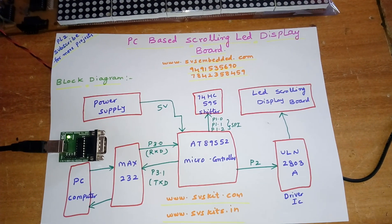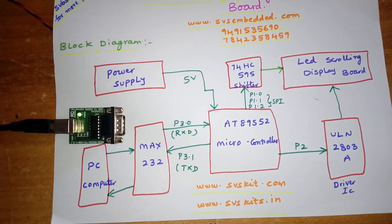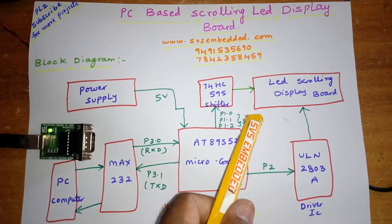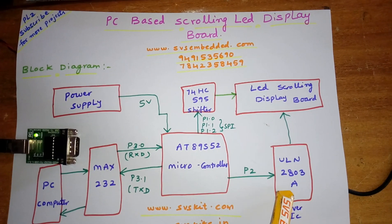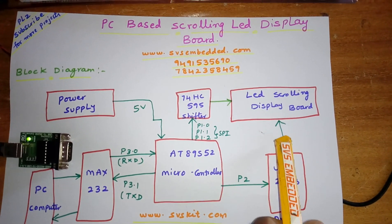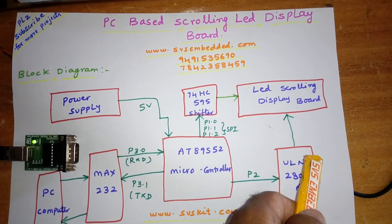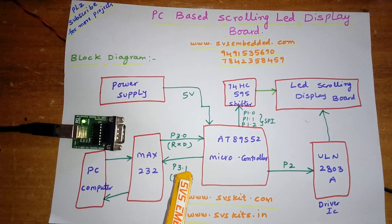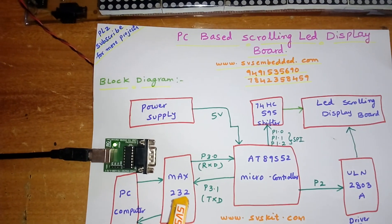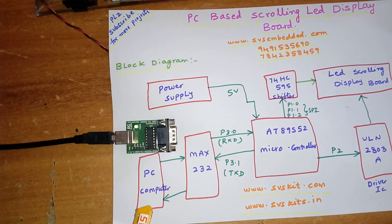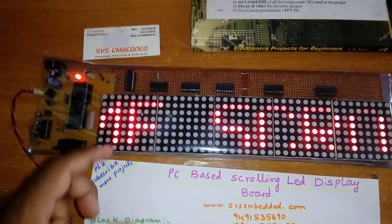I am using a 74HC595 shift register connected to the LED scrolling display board. For the data line I am using a ULN2803 line driver IC, connected to the controlling pins and data line. Port 3.0 and port 3.1 (RXD and TXD) are connected to the MAX232 and then to the PC — this is the PC-based scrolling message display.